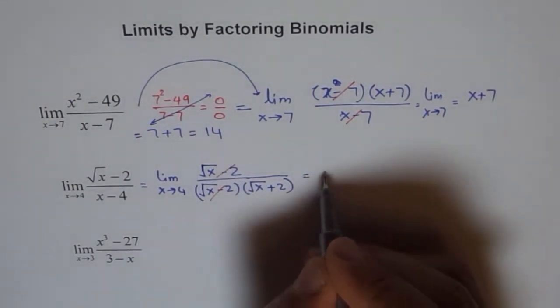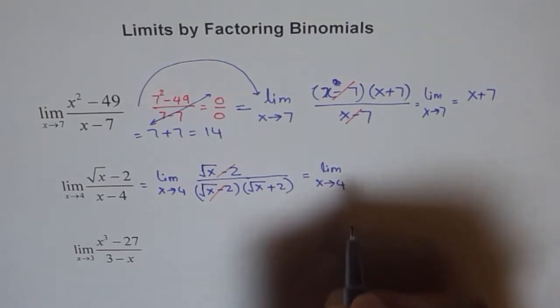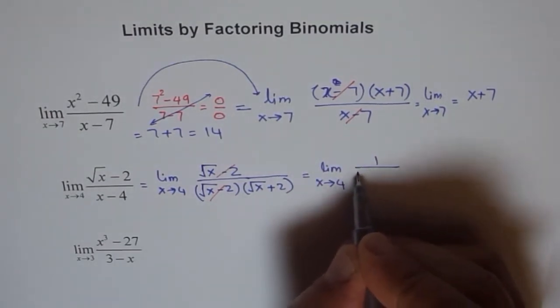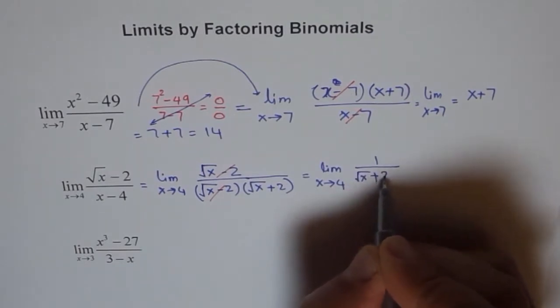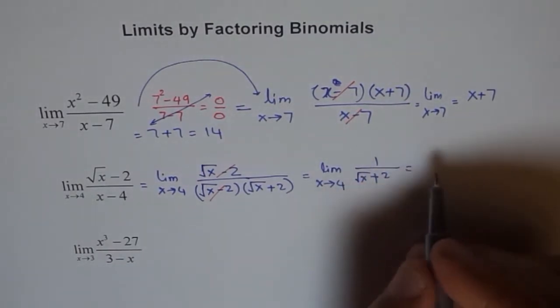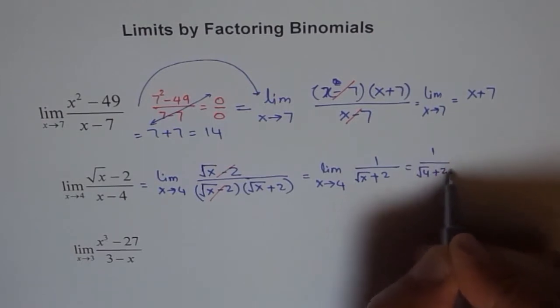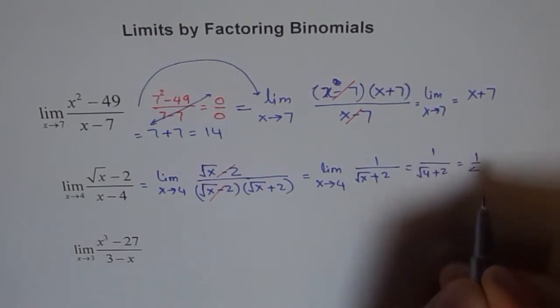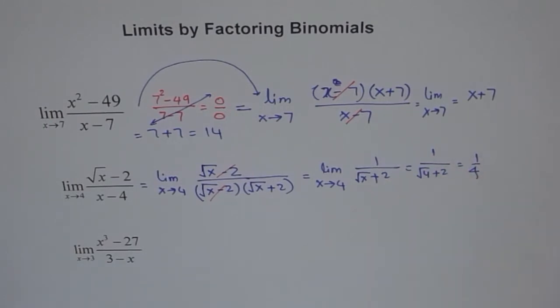And once you do that, you can write this as limit x approaches 4 and we have 1 over square root of x plus 2. And if I substitute 4 here, I get what? I get 1 over 4 square root 2, which is 1 over 4. The square root of 4 is 2 and 2 plus 2 is 4. So limit of this function you can find by factoring. So this is what I am trying to explain here.